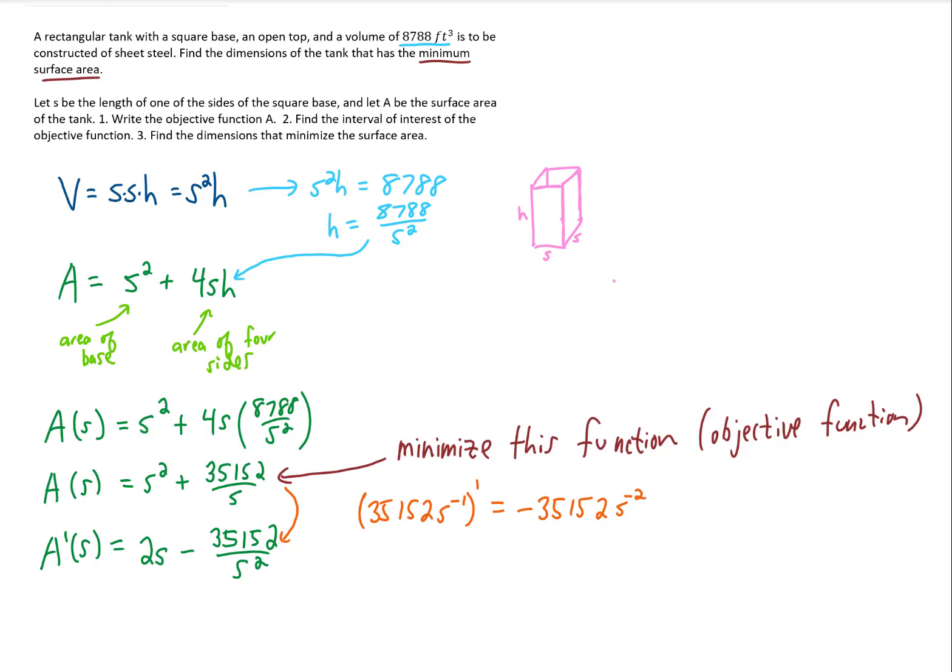And there is a certain interval of interest for this objective function. In other words, it's the domain of this function. So what are our possible values of S for this function? Well, S has to be positive or else we won't have a tank. And presumably the base of this tank could be any number, all the way up to, but not including, of course, infinity. So the domain of this objective function is 0 to infinity.